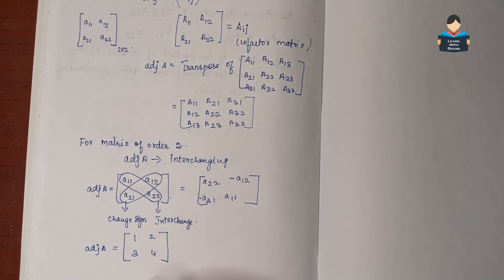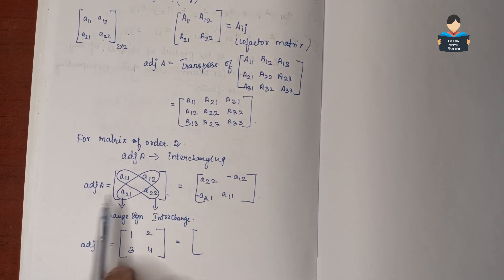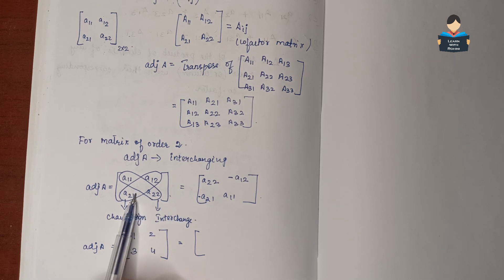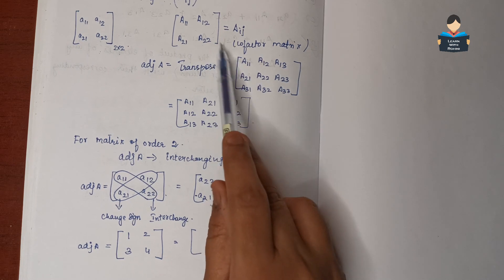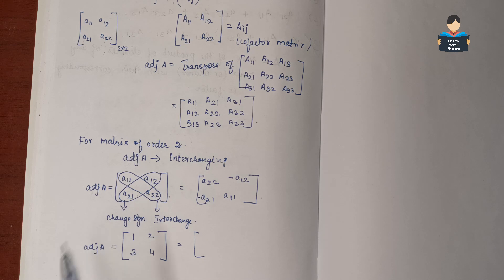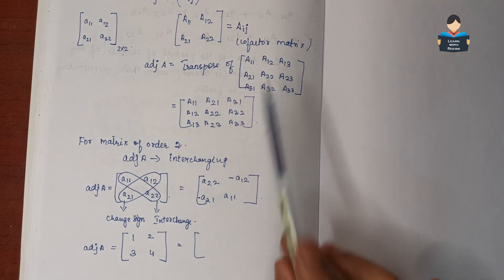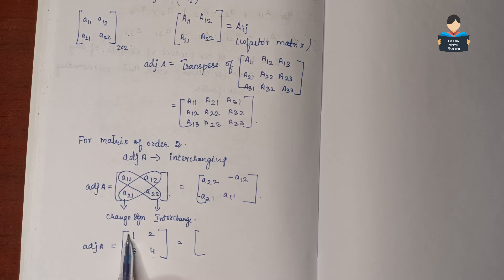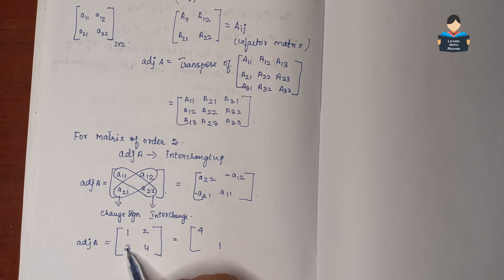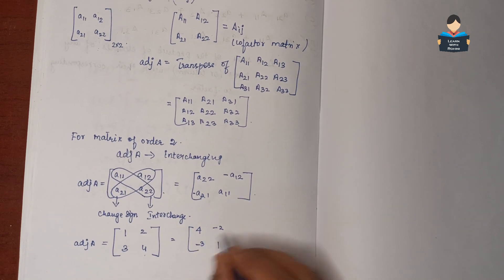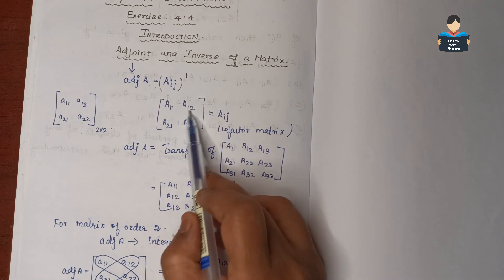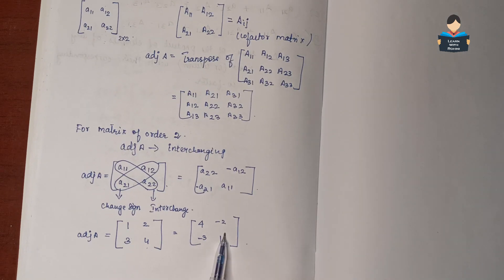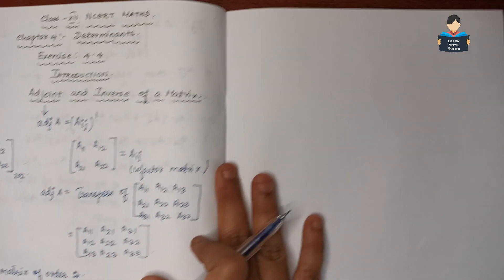The adjoint of A can be found using the cofactor matrix method. This one method can be applied to both 2x2 and 3x3 matrices. So we can solve using this method.